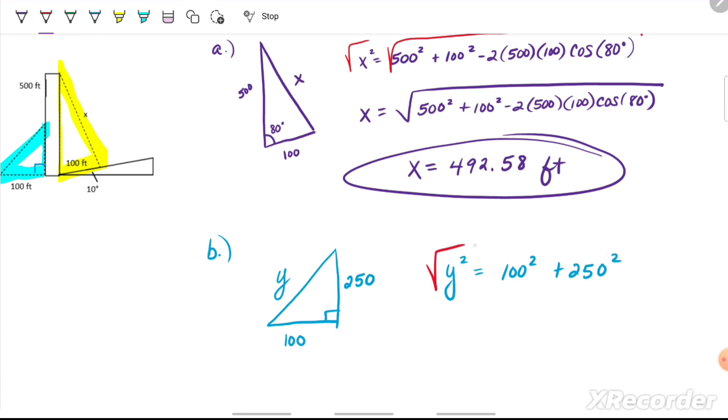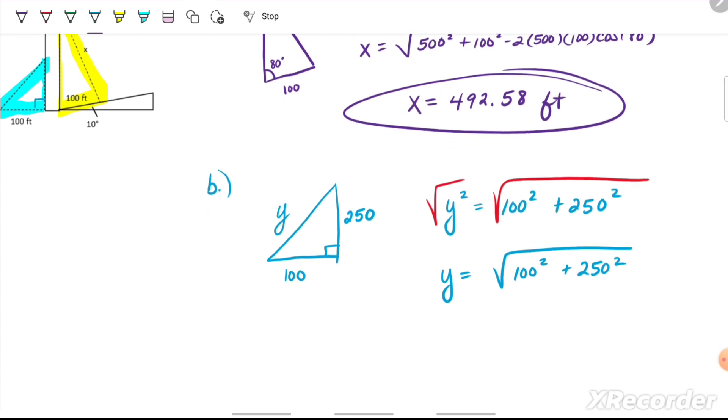And again, we're going to need to take the square root of both sides. And again, I would just plug this whole big radical in my calculator at one time, the square root of 100 squared plus 250 squared. We'll round our answer to the nearest hundredth. We get y to be equal to 269.26 feet.